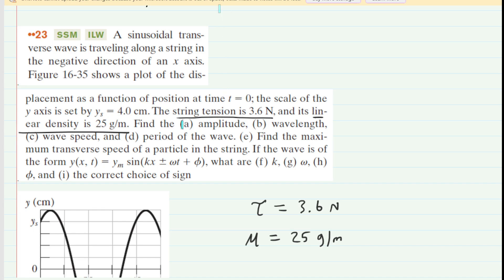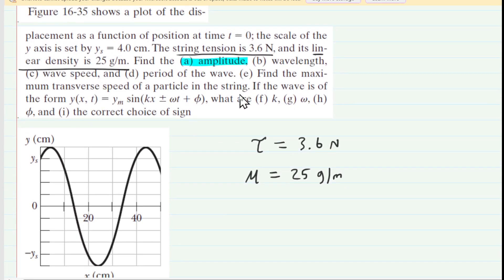In part A, we are asked to find the amplitude of this wave. Now, we can find the amplitude by inspection, because we know that the amplitude is measured from this equilibrium position to the maximum vertical displacement. So that distance there is going to be our amplitude. We symbolize amplitude by y sub m. Now, again, we can do this by inspection, because we know that y sub s is 4 centimeters. So that means each tick mark here is 1 centimeter.